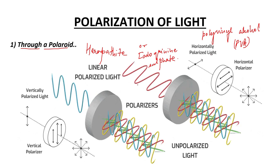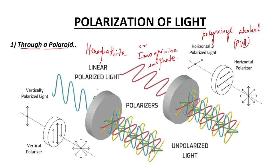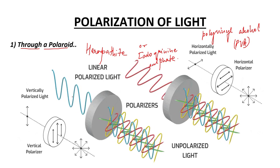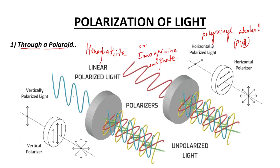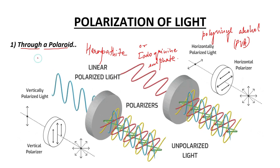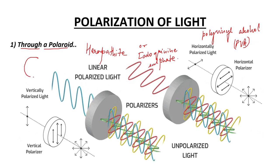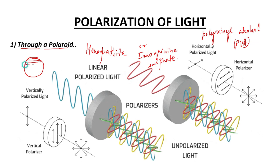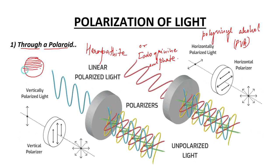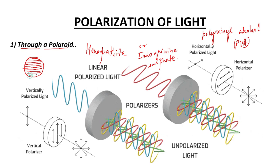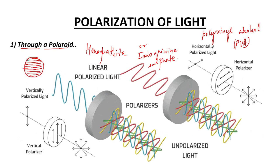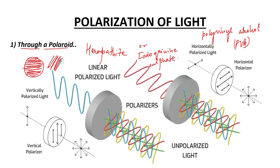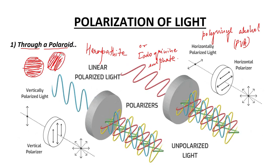During the manufacture of the Polaroid, the crystals of Herapathite or the PVA polymer chain are stressed and aligned in a linear fashion. Suppose this is a Polaroid and the crystals are aligned like this — in this linear fashion, or the polymer chain of Polyvinyl Alcohol is aligned in this fashion. But it will be aligned in a linear fashion.